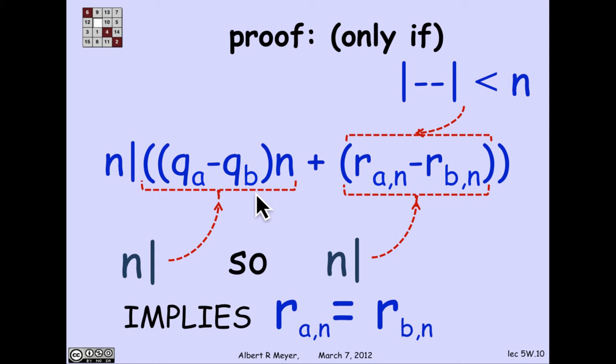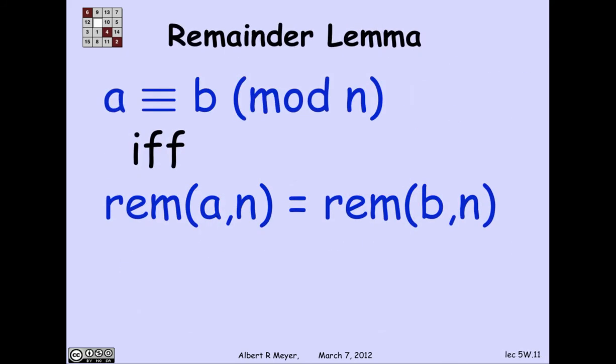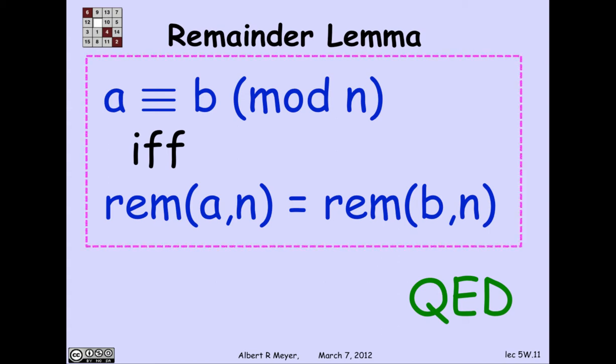So if n divides a number that's between 0 and n minus 1, that number has to be 0. Because it's the only number that n divides in there. So in fact, the difference of the remainders is 0. And therefore, the remainders are equal. And we've knocked that one off. So there it is, restated. The remainder lemma says that if they're congruent, if and only if, they have the same remainders. And that's worth putting a box around to highlight this crucial fact, which could equally well have been used as a definition of congruence.